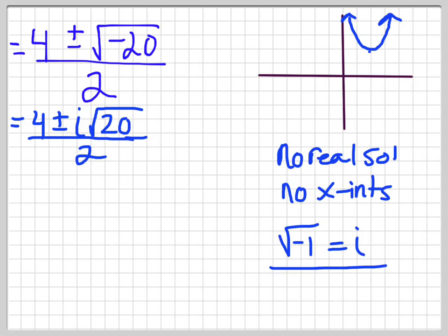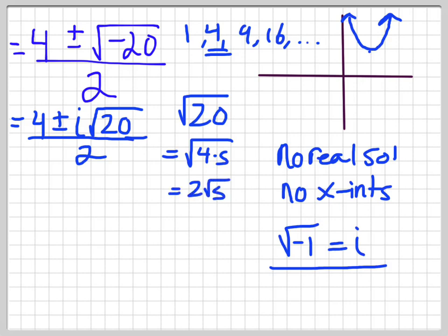So that way now we can worry about reducing that root 20. So this is not a video on reducing the root, but I will reduce this one. So root 20, what I do is I like to think of the largest perfect square that divides into 20, so I'm just going on my list: 1, 4, 9, 16, obviously it's 4. So I rewrite this as 4 times 5, which is 2 root 5, which ends up being 4 plus or minus. And I put the number that's in front of my root in front of the i, so 2i root 5 all over 2.